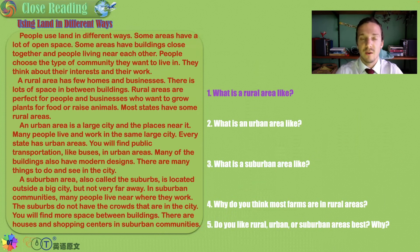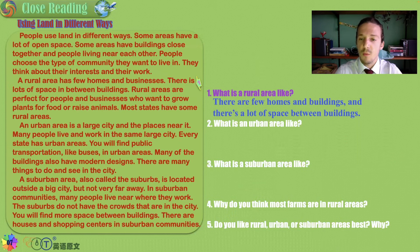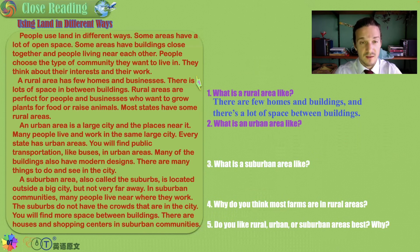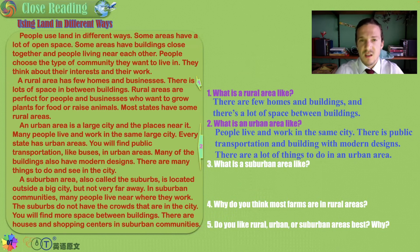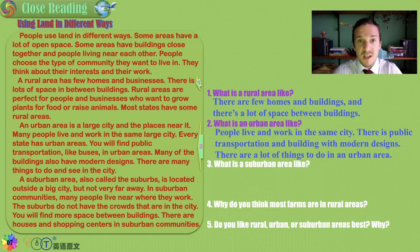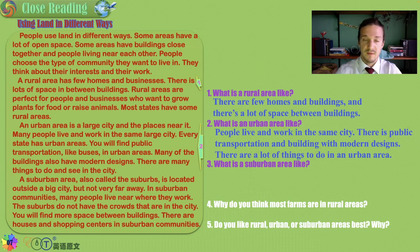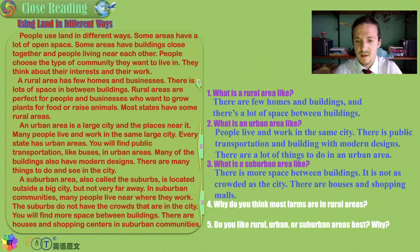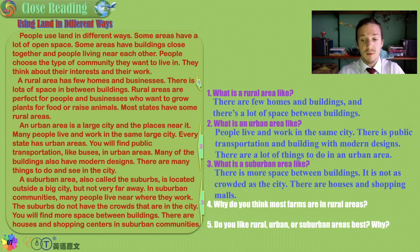What is a rural area like? These are more the farmlands — big open spaces, few homes and buildings. What is an urban area like? Think about your city center — people live and work in tight spaces, with public transportation, modern designs, tall buildings, lots of things to do, and lots of noise. What about a suburban area? It's the in-between — more space than urban but less space than rural, not as crowded as the city but more crowded than the farmland, with some houses and shopping malls but devoid of a real personality.